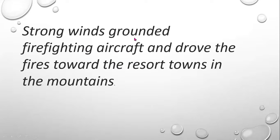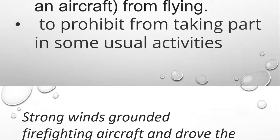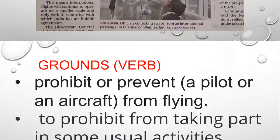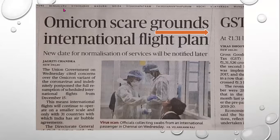Present tense is 'ground.' Past tense is 'grounded,' and past participle is again 'grounded.' I do believe that you people have understood the meaning of 'grounds' and how to make use of 'ground' in a sentence.